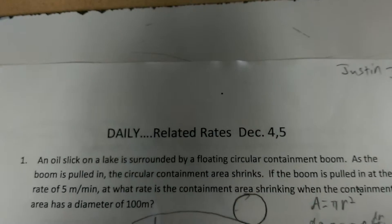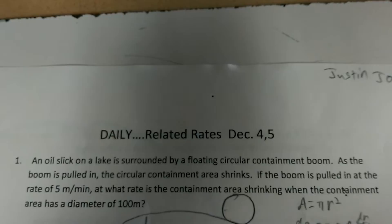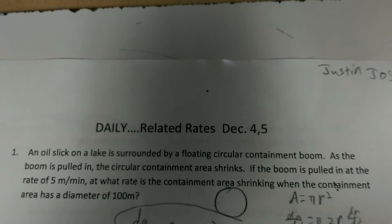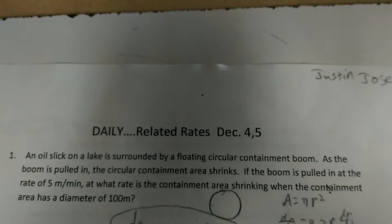An oil slick on a lake is surrounded by a floating circular containment boom. As the boom is pulled in, the circular containment area shrinks. If the boom is pulled in at the rate of 5 meters per minute, at what rate is the containment area shrinking when the containment area has a diameter of 100 meters?